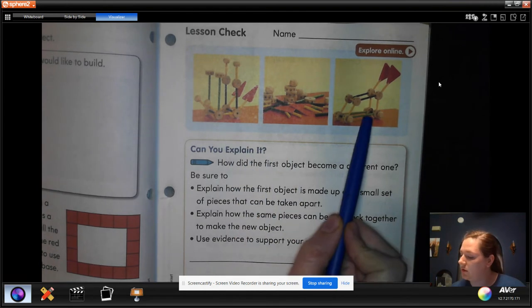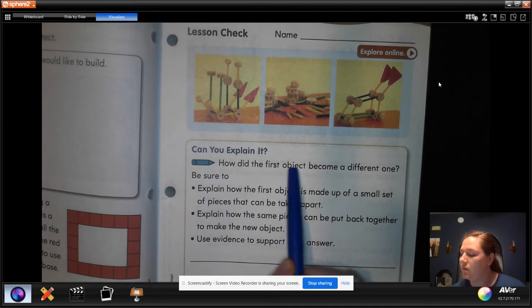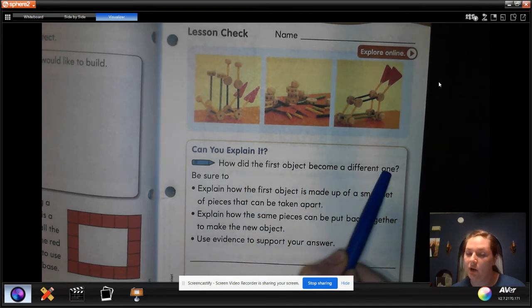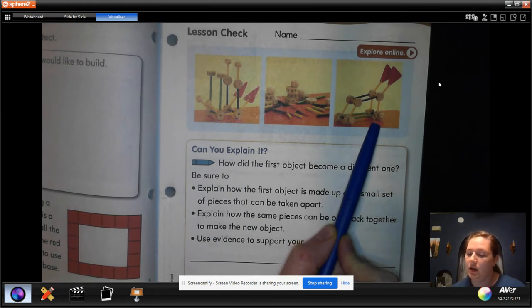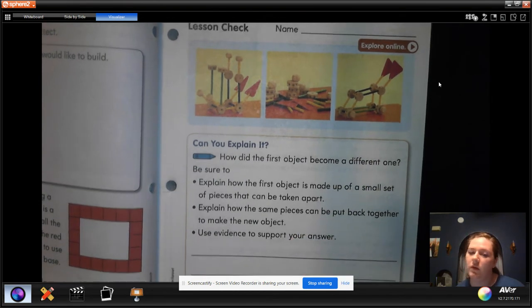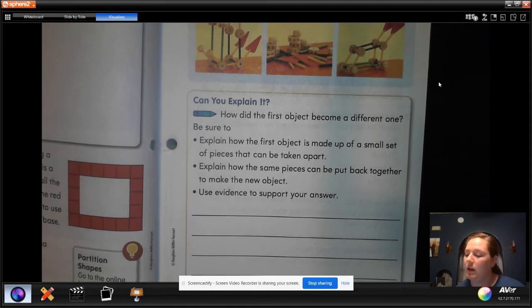So take a look at the pictures and then answer how did the first object become a different one? How did the first object become something different? And you can write down your answer here. If you need ideas of what to write, they give you ideas here.